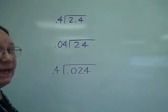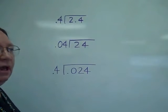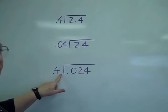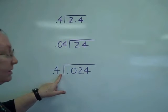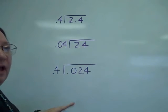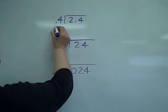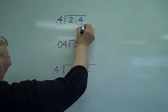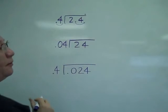Let's look at some problems that have the same numbers in it, but the decimals are in different places. Remember the rule says move the decimal as far as you can on the outside, and you're going to do the same thing to the inside. No matter what it looks like, we're going to do that first. So I'm going to move it over 1 on the outside, 1 on the inside, and it's going to go straight up from there.